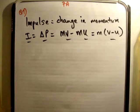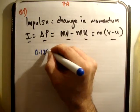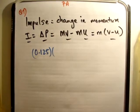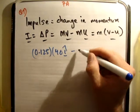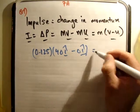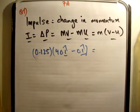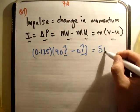So in this case it's going to be 0.125 kilograms times the final velocity which is 40 i-hat minus 0 i-hat. Alright, and the answer there we're going to get is 5 newton seconds.